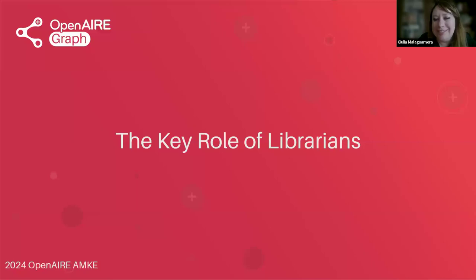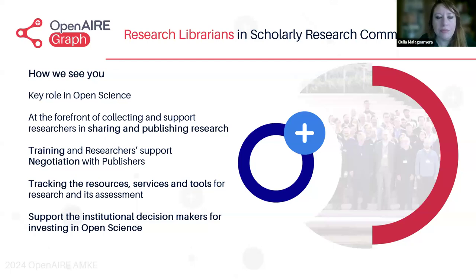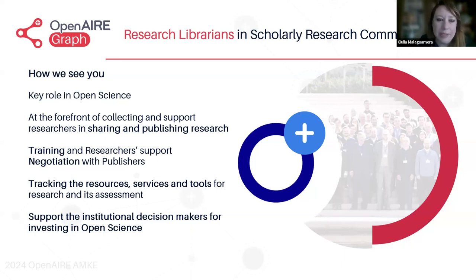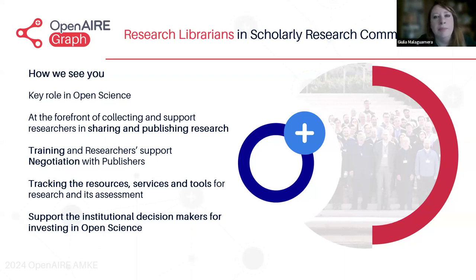So what is the key role of the research librarian? We see you as having a key role in OpenAIRGraph. You are kind of the ones driving and supporting the decision-making at any level. In particular, you train early career researchers in the practices of open science and open access.